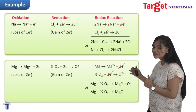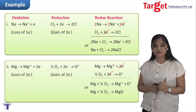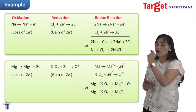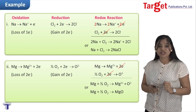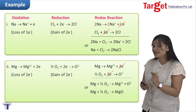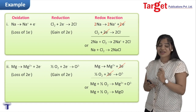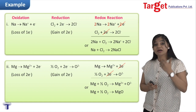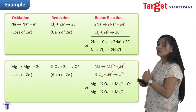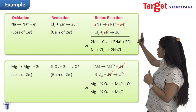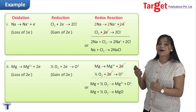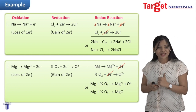Now students, can you notice something in these examples? For sodium, it had no charge in elemental form — its number was 0 — and when it loses one electron the number goes from 0 to +1. For magnesium, it also starts at 0 and loses electrons to become Mg²⁺, so the number goes from 0 to +2. For reduction: chlorine gains electrons and its charge goes from 0 to −1, and oxygen starts at 0 and by gaining electrons becomes −2. So the number decreases.